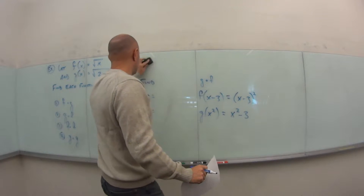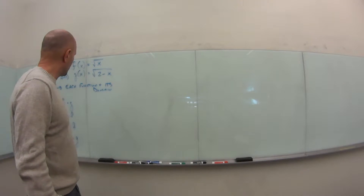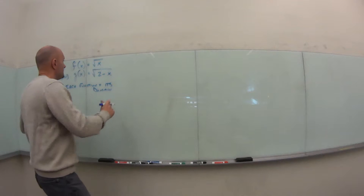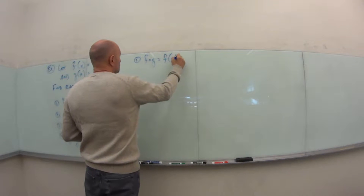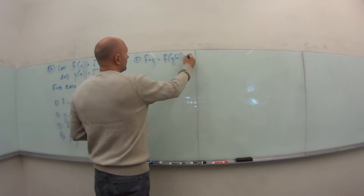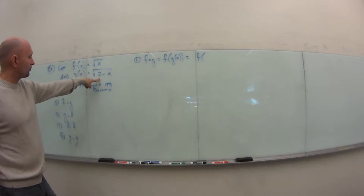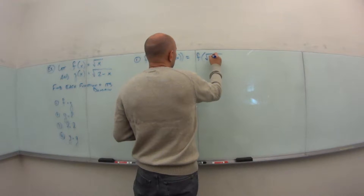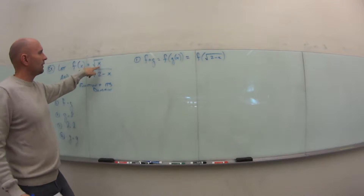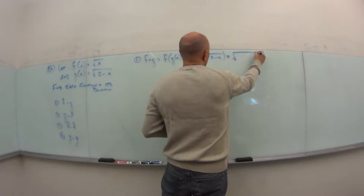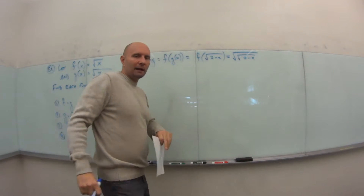I'll work the first one with you, then you can pause and try the others. For f∘g, which is f of g(x), g(x) is √(2 − x). So I'm plugging √(2 − x) into the f function anywhere I have an x, giving me the square root of √(2 − x).